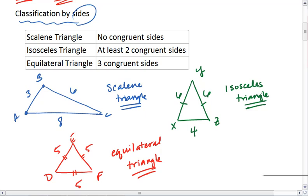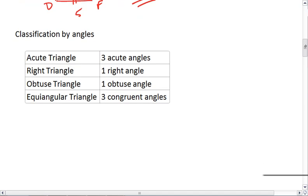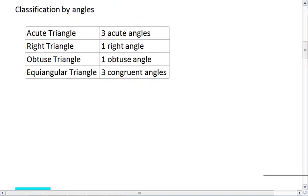Take a moment, make sure that you recognize the three ways that we can name triangles based on their sides. Because now, we're going to look at how to classify triangles based on angles. And there are four ways to do this.